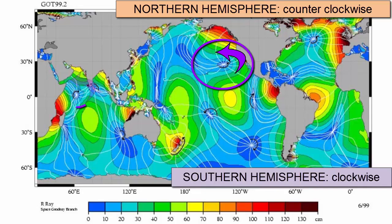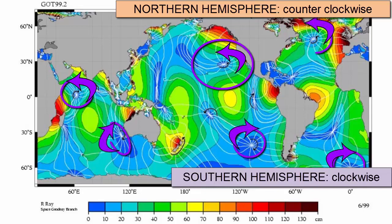There are many amphidromic systems across the world's oceans, produced by the varying shapes of the ocean basins and the configuration of continents and islands.